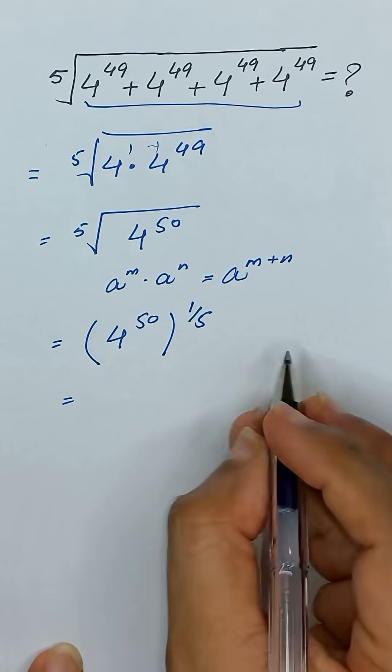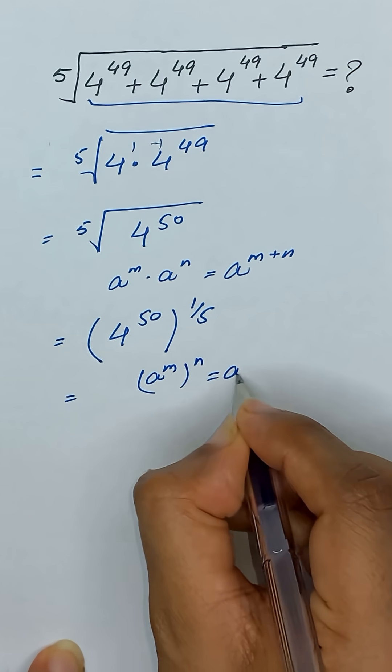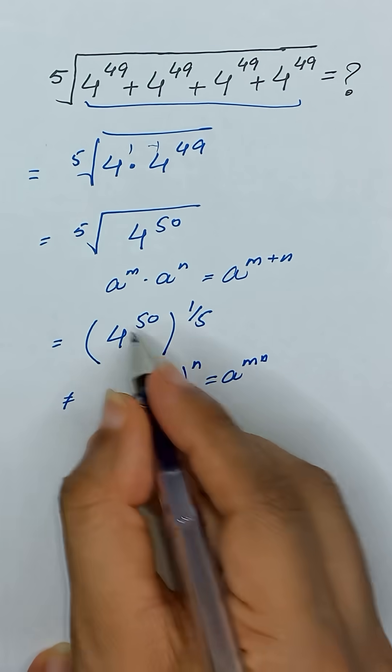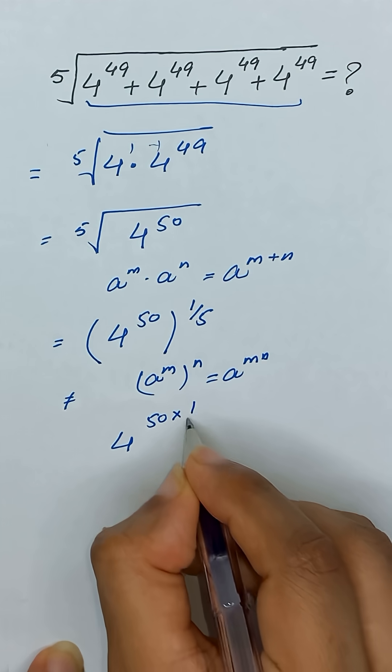As we know that a to the power m whole power n is equal to a to the power mn. So it will become 4 to the power 50 times 1 divided by 5.